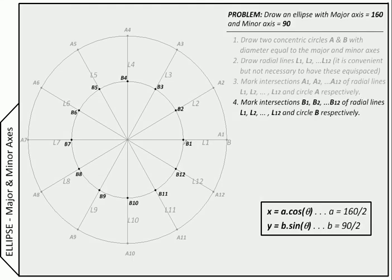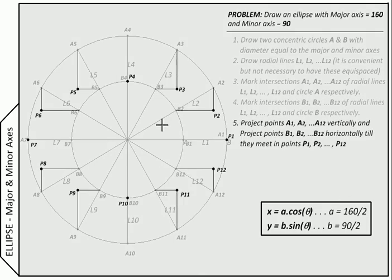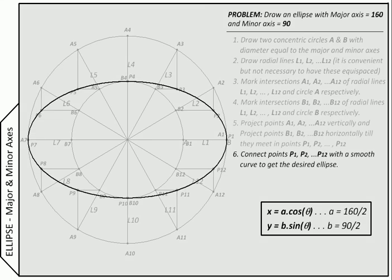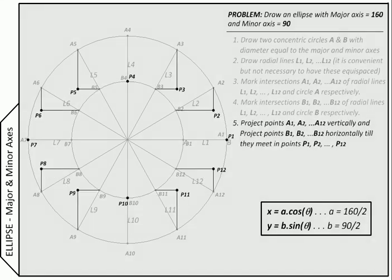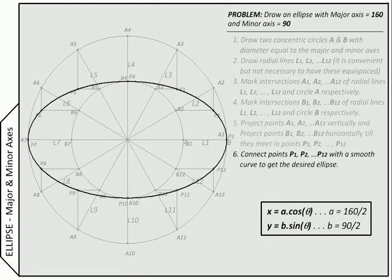Then project the corresponding intersections horizontally and vertically till they meet. And these points of meeting, intersection points, will be the points on circle. So connect them with a smooth curve.